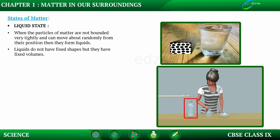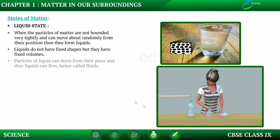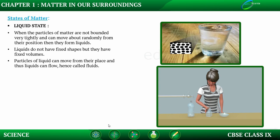Liquids take the shape of whatever container they are kept in. Particles of liquid can move from their place, and thus liquids can flow — hence they are called fluids. Water has been seen to flow through a pipe, through a tap, and occupy space inside a bottle. When allowed to flow freely, it occupies the space in a container. Therefore, fluids are any substance that can flow.